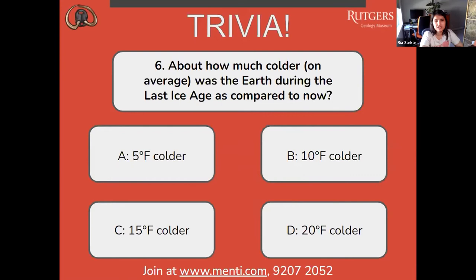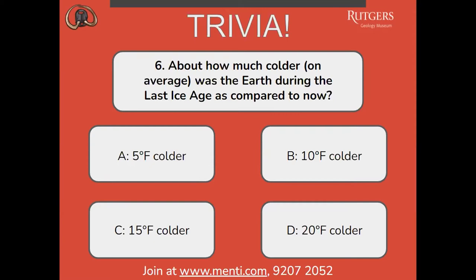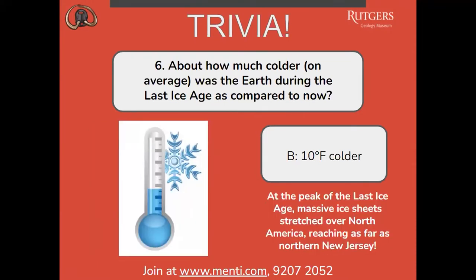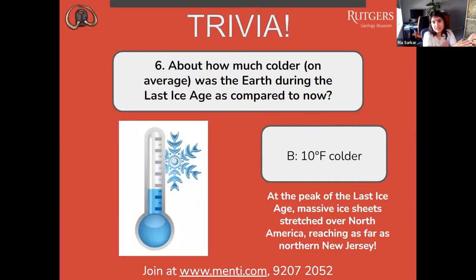How much colder on average was the Earth during the last ice age compared to now? A, five degrees Fahrenheit colder; B, ten degrees colder; C, fifteen degrees colder; or D, twenty degrees colder. The correct answer is B, ten degrees Fahrenheit colder. At the peak of the last ice age, massive ice sheets stretched over North America, reaching as far as northern New Jersey. If you're familiar with central Jersey, the edge of the glacier was around where Woodbridge Mall is today.